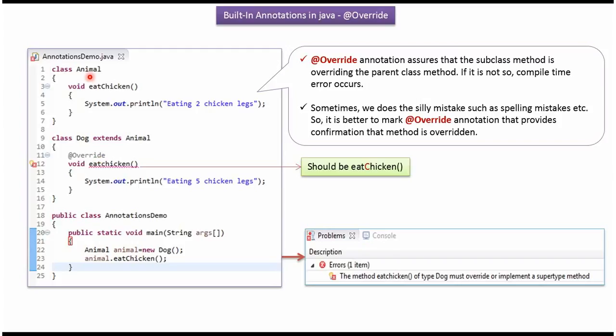Here you can see the Animal class. It has an eatChicken method. Here you can see the Dog class which extends Animal class. So Dog class is a subclass which tries to override the eatChicken method.